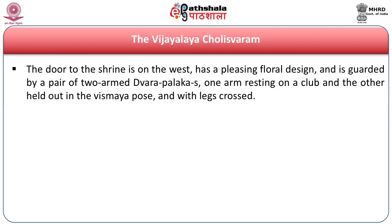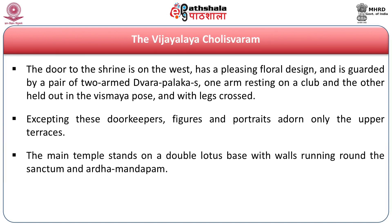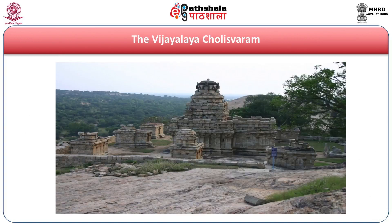One arm of the Dvarapala is resting on a club and the other is held out in the Vismaya pose or Vismaya posture, with the legs crossed. Except for these doorkeeper figures, portraits are only in the upper terraces. The main temple stands on a double lotus base, with walls running around the Shantam, Shantaram, Ardham, and Dabham, embedded with elegant pilasters, pillars, and palagai — stone planks. This is the view of the Vijayalaya Cholishvaram, built upon a rocky surface close to the present Narthamalai, whose ancient name is Nagattar Malai.